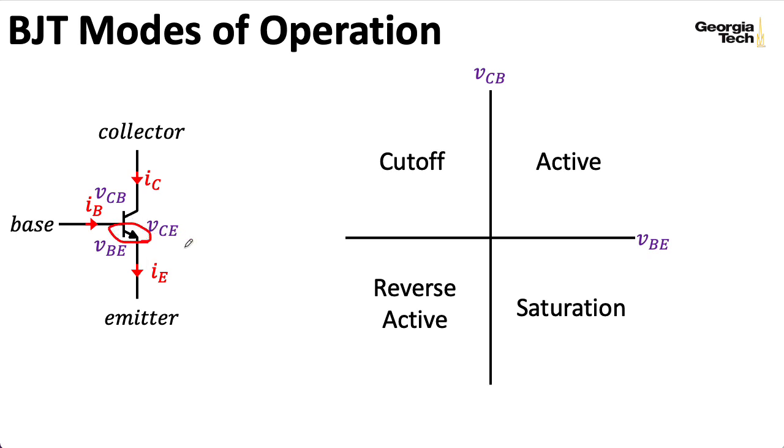So for positive VBE, this PN junction here is forward biased. However, for positive VCB, this junction here is actually reverse biased. I can think of writing a little PN junction here like this.